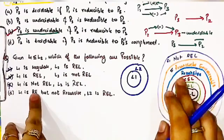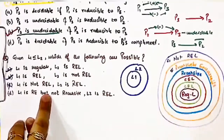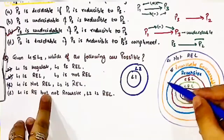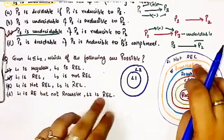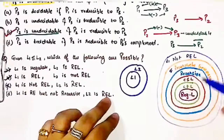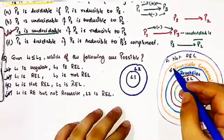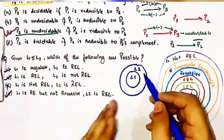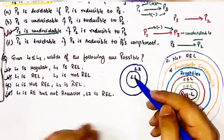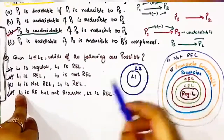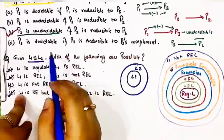The fourth option states that L1 is recursively enumerable but not recursive — meaning only the concentric part, not the inner recursive part. If L1 lies here, then L2 being recursively enumerable is also a possibility, because L1 and L2 can both lie inside the RE set, with L1 smaller than or equal to L2. So this is also a valid possibility. Except option C, all options are possible when L1 is reducible to L2.